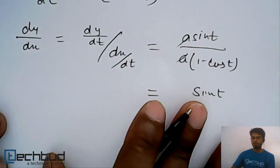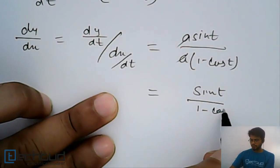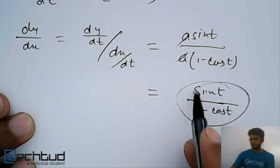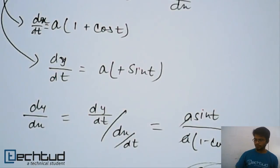Which is equal to sin t - this a is cancelled out - so it will be sin t upon 1 minus cos t. You can further reduce this in form of tan θ/2. That can be done always, but this is the differentiation and this is parametric form.